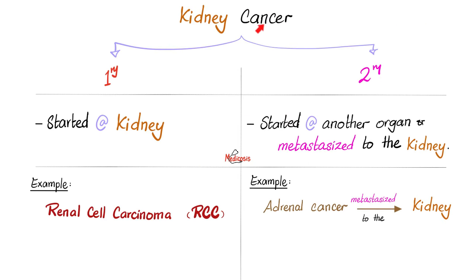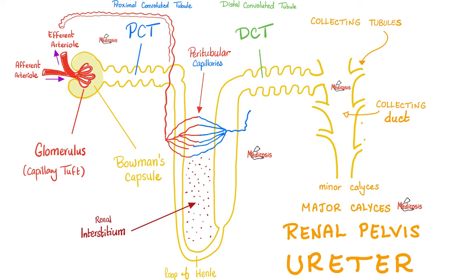Kidney cancer can be divided into two categories. If the cancer started in the kidney, we call this primary — such as today's topic, renal cell carcinoma. But if the cancer started somewhere else and then metastasized to the kidney — for example, from the adrenal gland, the liver, or the colon — we call these secondaries or metastases.